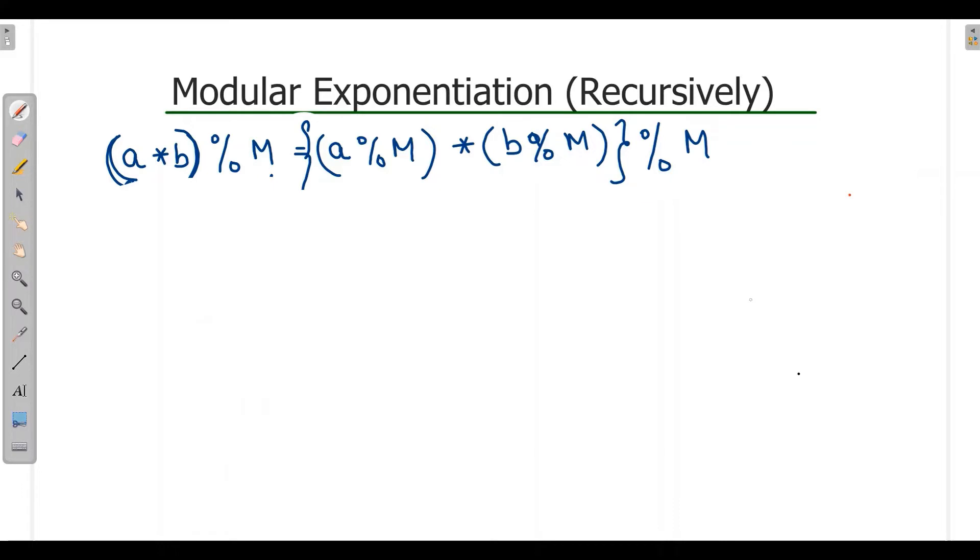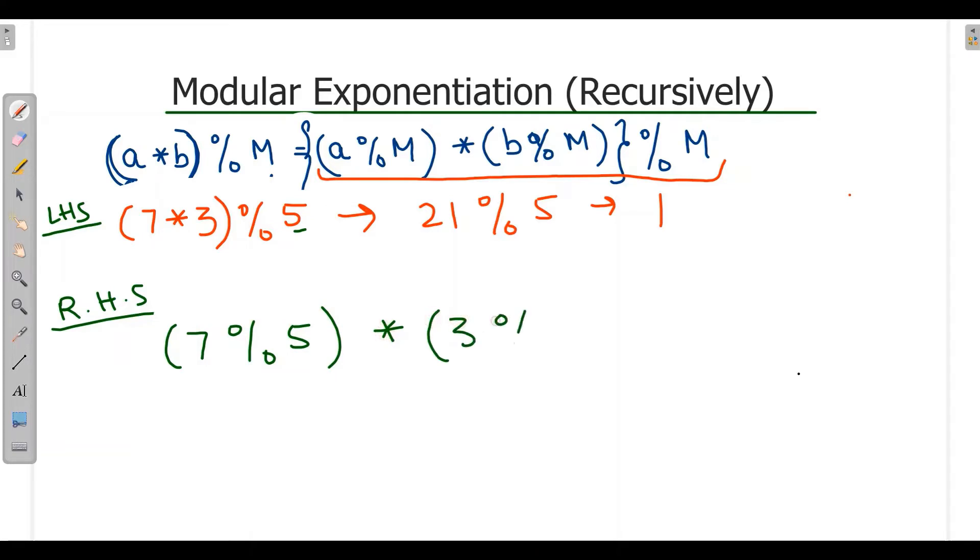If we have here 7, b for 3, and here I will take M for 5. When we simply calculate, it will be 21 mod 5 which will result to 1. Now when we calculate using the right expression, I will write RHS and LHS. For this, a is equal to 7, 7 mod 5, into b is 3 mod 5.